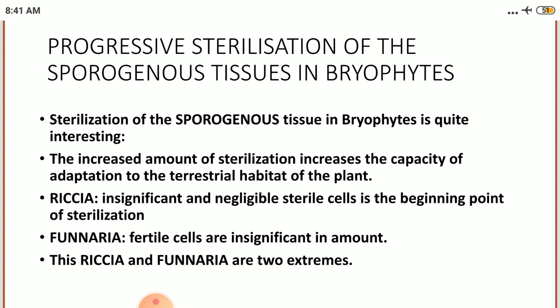For example, Riccia has an insignificant and negligible amount of sterile cells, which is the beginning point of sterilization. Riccia is the member of the class Hepaticopsida, which is the primitive class of the bryophytes, and ending with Funaria, which is the member of the class Bryopsida, where the sterile cells are increased and the fertile cells are insignificant in amount. So we can say Riccia and Funaria are the two extreme examples of the progressive sterilization of the sporogenous tissues in bryophytes.